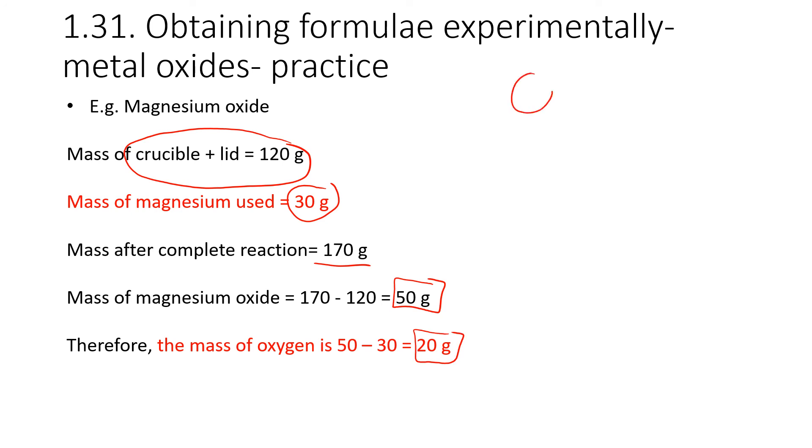So now we do the same calculations, oxygen and magnesium. Moles of oxygen are going to be 20 divided by 16, and the moles of magnesium are going to be 30 divided by 24. So for both of those, we get 1.25 as the number of moles. And the ratio between the two is 1 to 1, which means that our equation is MgO.